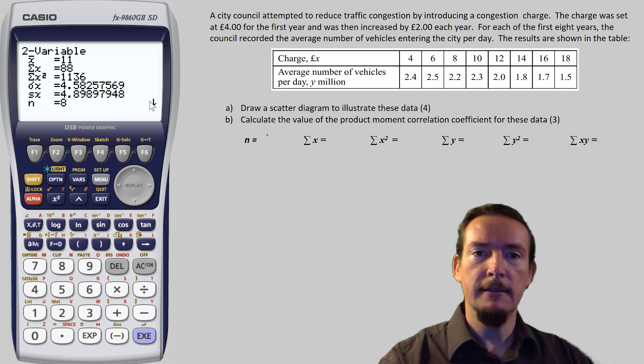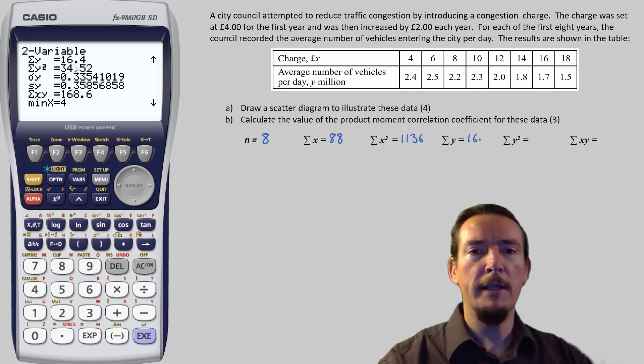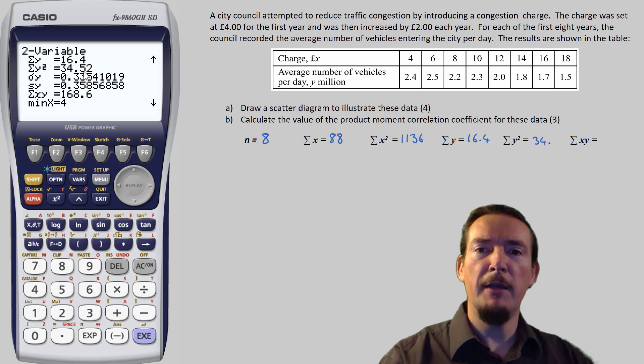n is 8, sigma x is 88, sigma x squared is 1136. Now scrolling down, we can see that sigma y is 16.4, sigma y squared is 34.52, and sigma xy is 168.6.